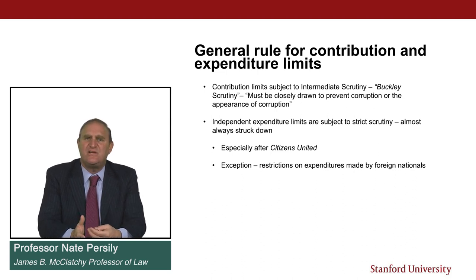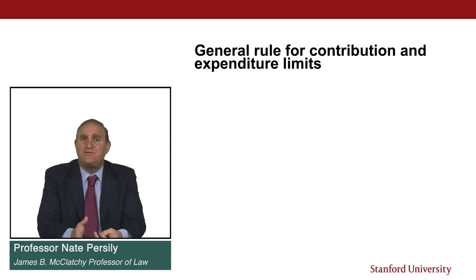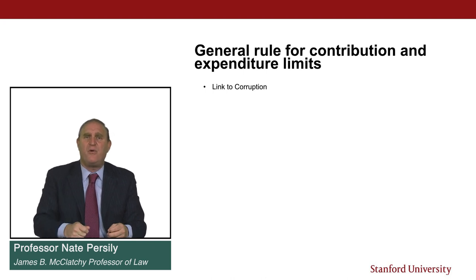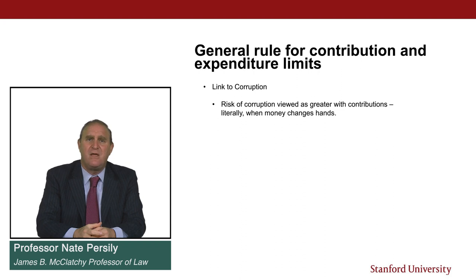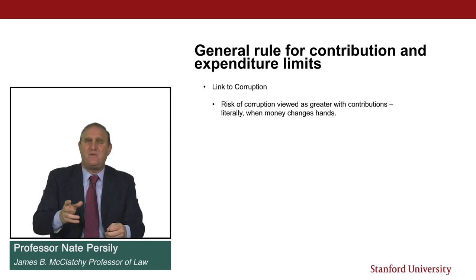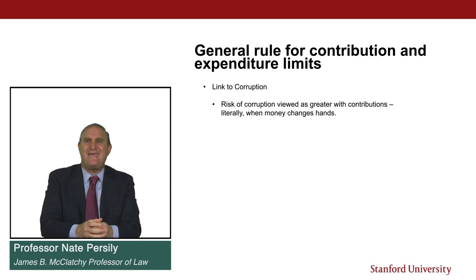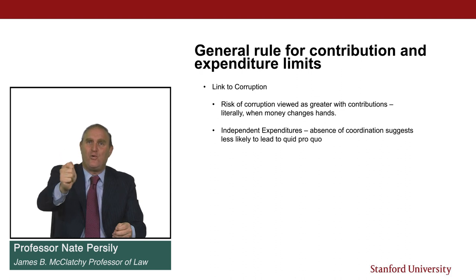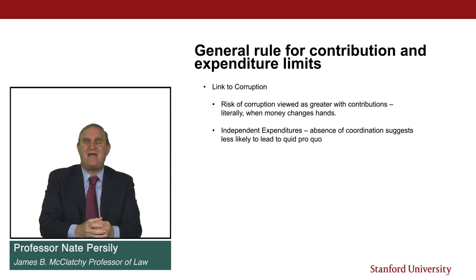Why does the court distinguish between contributions and expenditures? The first reason is that contributions and expenditures are seen as posing different threats when it comes to corruption. Contributions, because it's literally money changing hands — me giving money to a candidate or party — pose a much greater risk of corruption. Whereas independent expenditures, which are not coordinated with the candidate, where money doesn't change hands between the spender and the candidate, are seen as sufficiently absent of coordination that they won't lead to quid pro quo. In order to have quid pro quo risk, you have to give the quid to get the quo — give the money to the candidate to get the political favor.